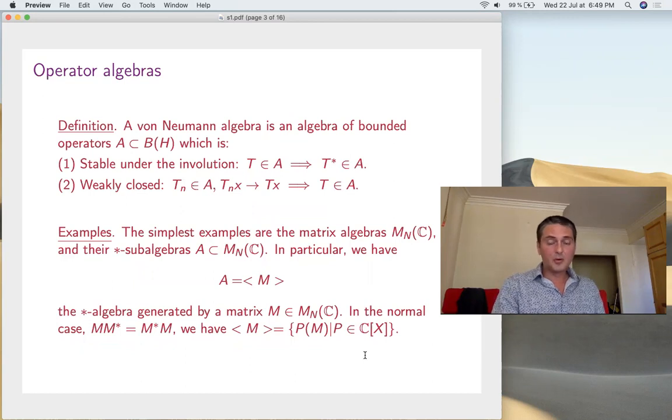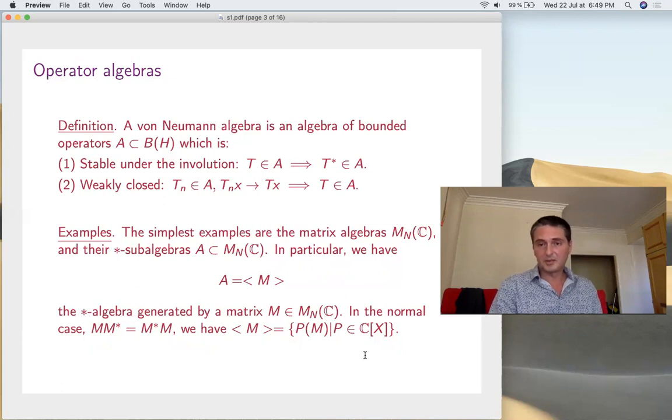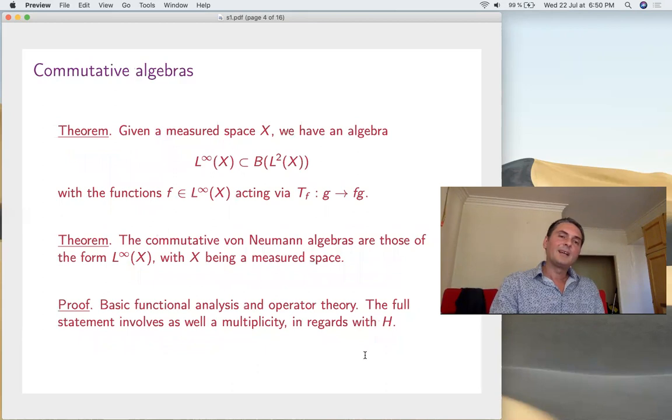Now, what are von Neumann algebras or operator algebras? That's how von Neumann called them when he started working on this. These are subalgebras of B(H) which are stable under the involution and also weakly closed, meaning that whenever you have a sequence which converges pointwise somehow to T, the limit must be in your algebra. Examples: matrix algebras, of course, star-subalgebras. Why just star? Because everything is weakly closed, of course. In particular, let's pick an example. You just take a matrix and then you take the star algebra generated by it. That's your von Neumann algebra. This means polynomials in m and m star. Now, in the normal case where m commutes with m star, this is just the algebra generated by m.